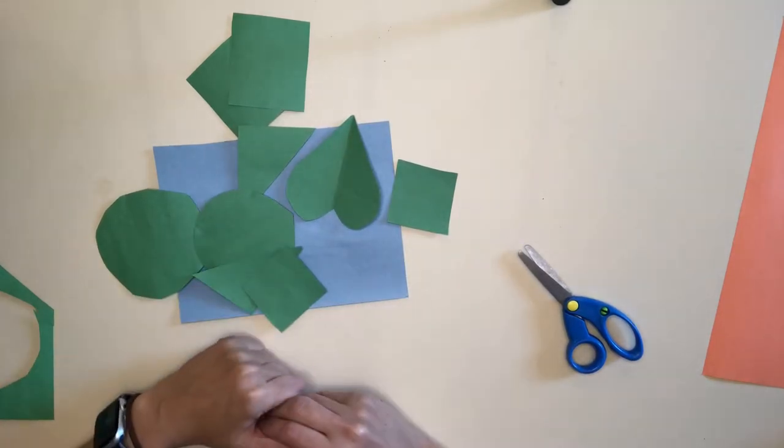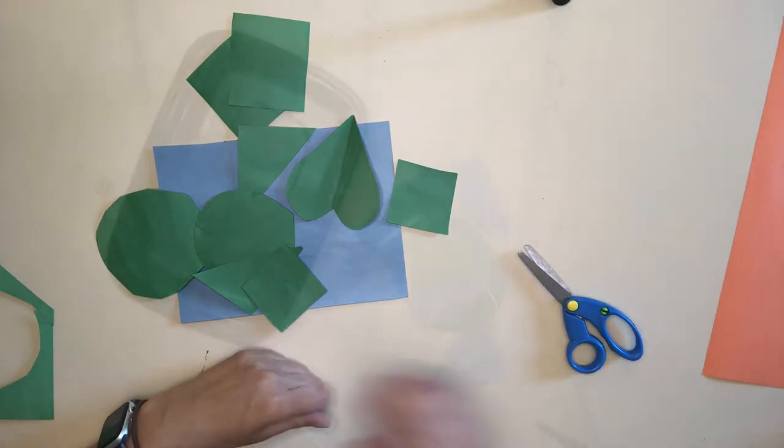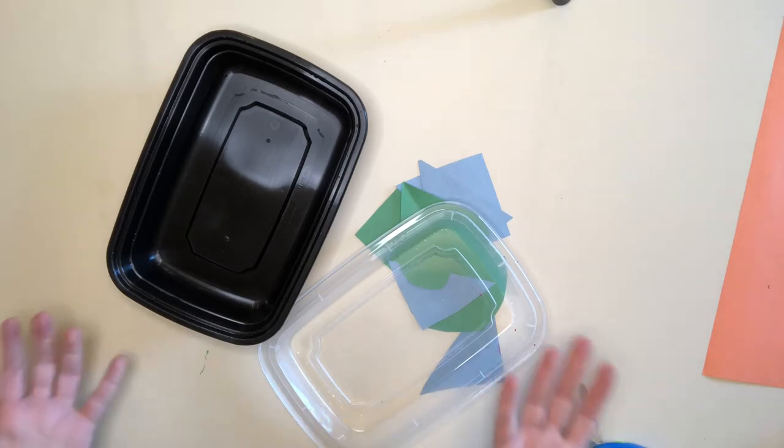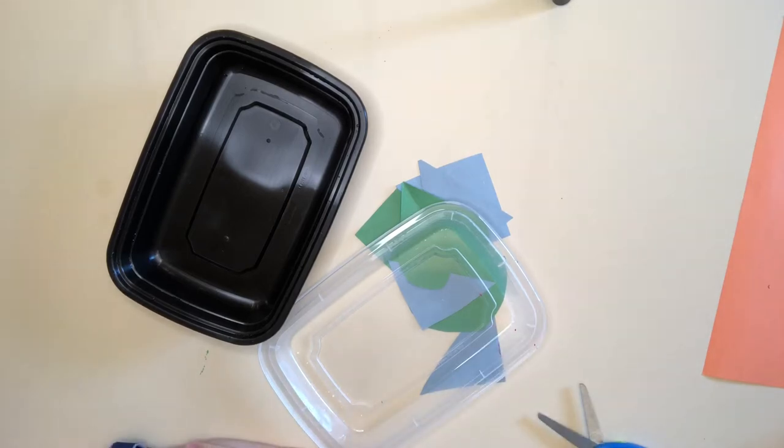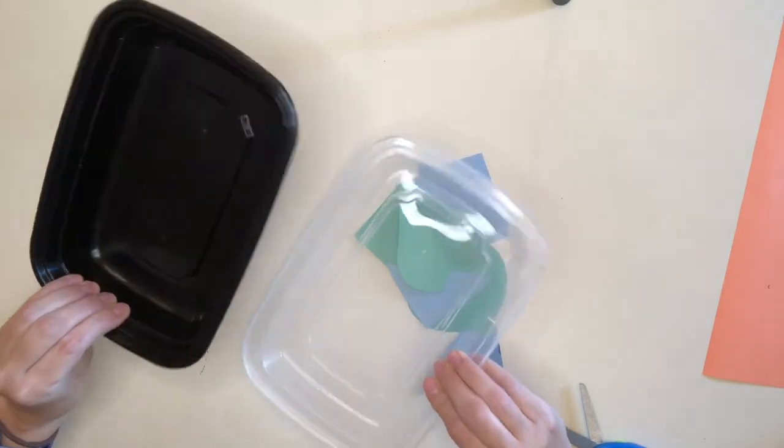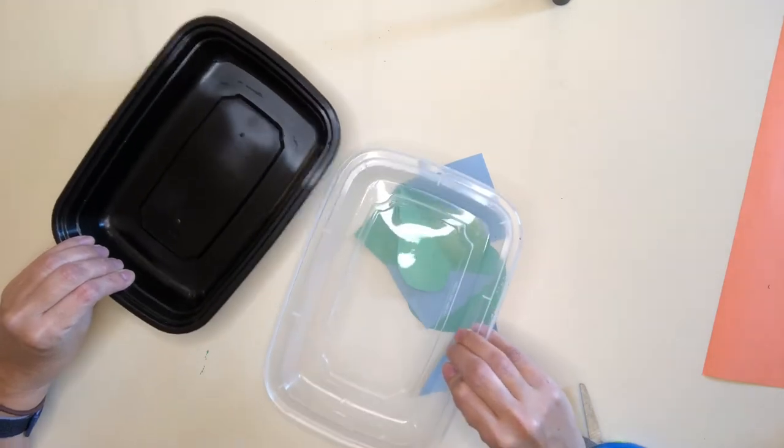Now our next step in the process is to actually do the shake painting. I'm so excited for this step! So remember, you need your reusable container that has a lid on it, and make sure that lid is really tight. We don't want anybody getting upset about paint in their house.